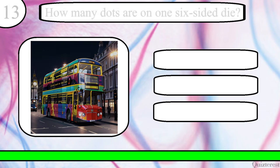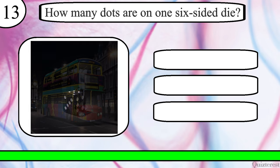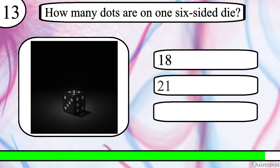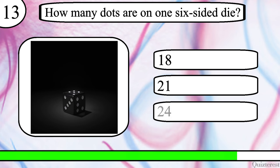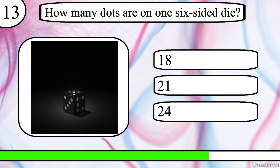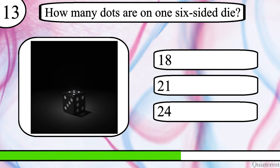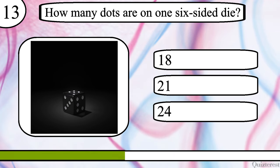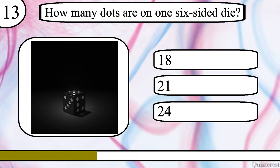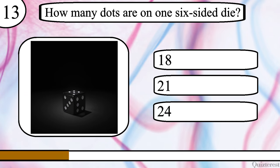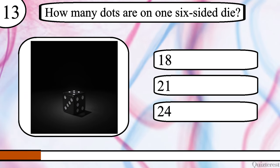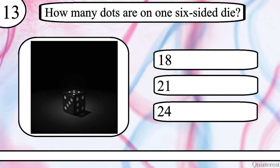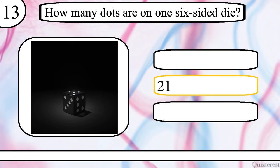Question 13. How many dots are on one six-sided die? 18, 21 or 24? The correct answer is 21.